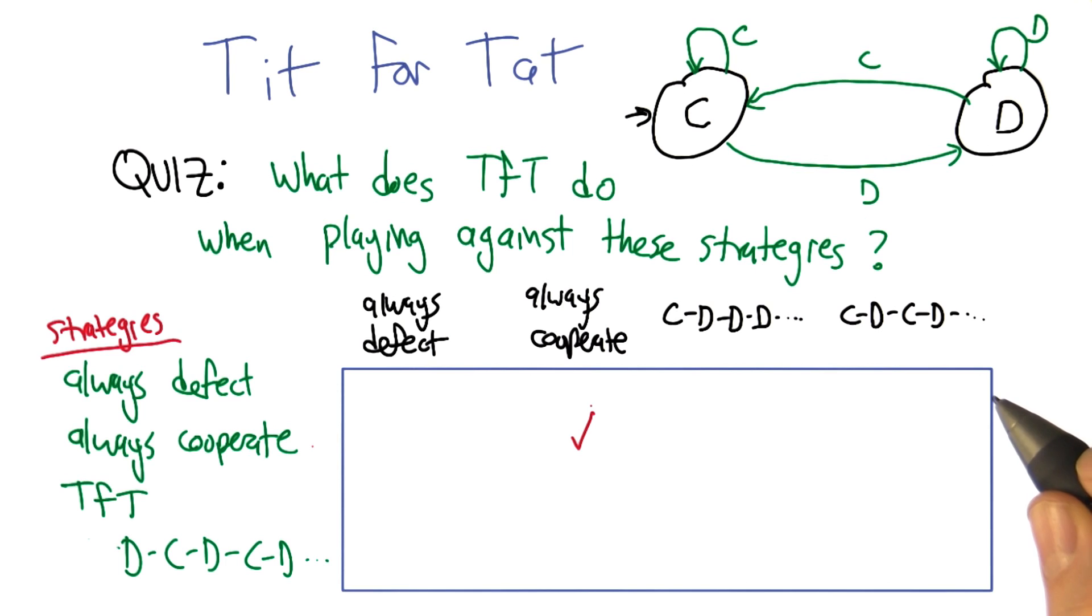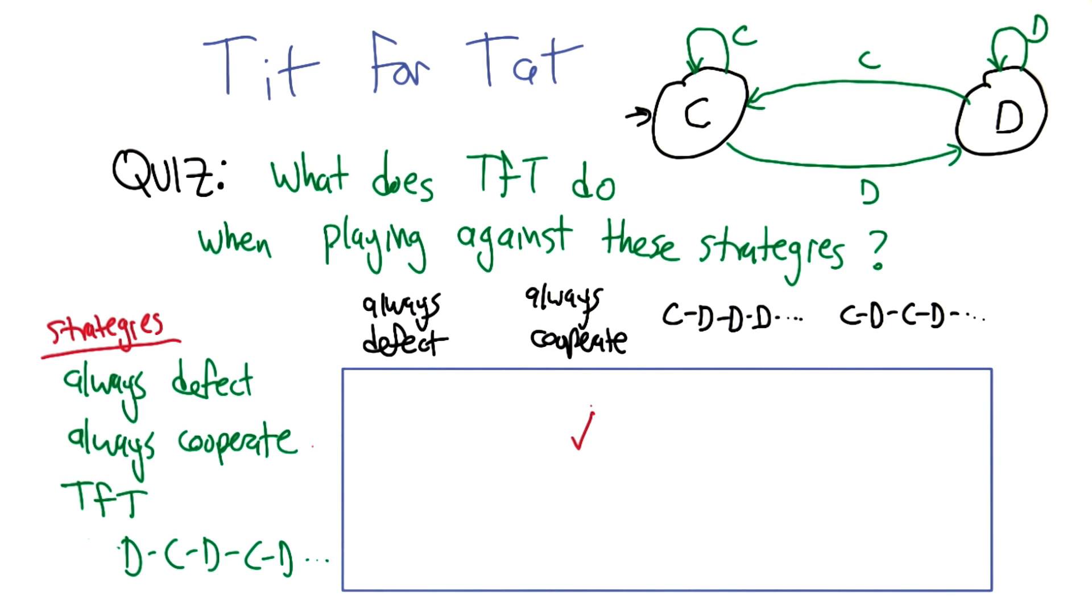All right. So what about if we play against always defect? Well, if we always defect, the first time I'm going to cooperate because that's what you said tit for tat is, but from that point on I will do what my opponent does, which is defect. So I will cooperate and then defect, defect, defect, defect, defect, defect ellipsis.